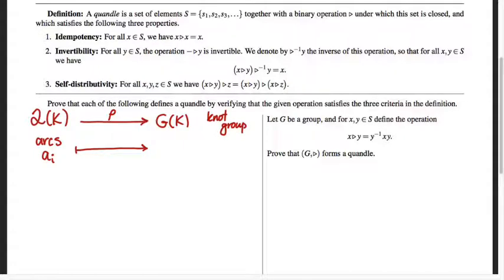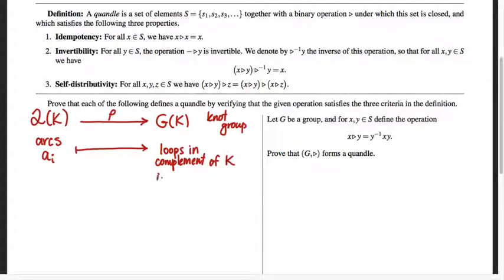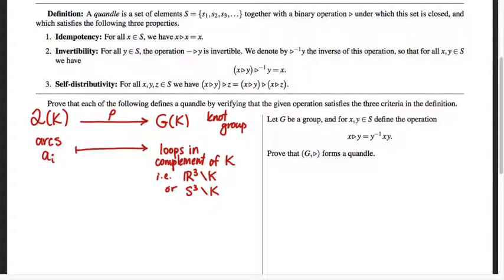The elements in a knot group are not arcs but are actually loops, and these are loops in the complement of the knot. I want to use KnotPlot in a second to get a visualization for this. These are loops in 3-space with K taken away, or equivalently the 3-sphere with K taken away. For technical reasons — a question of compactness — it's the latter we end up having to use. We associate with every arc in our knot diagram a loop in the knot complement.